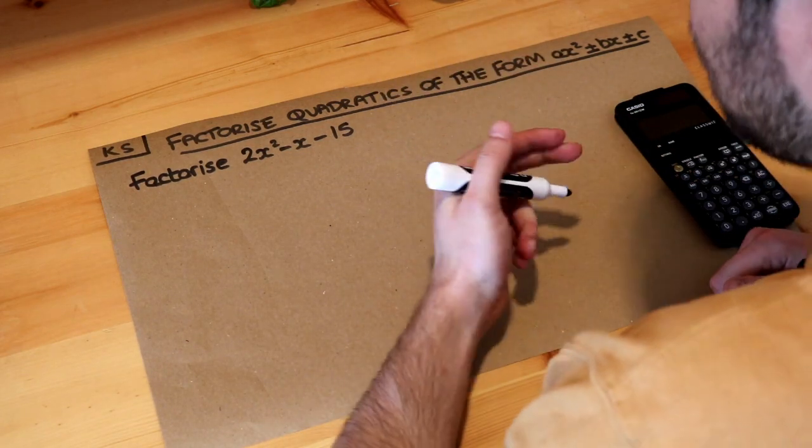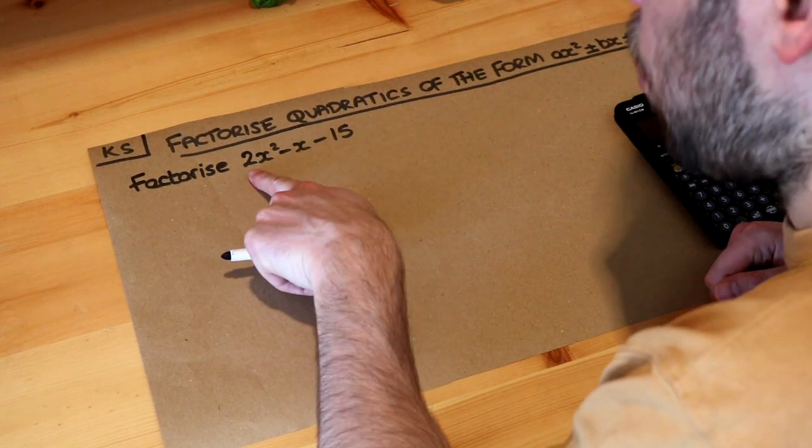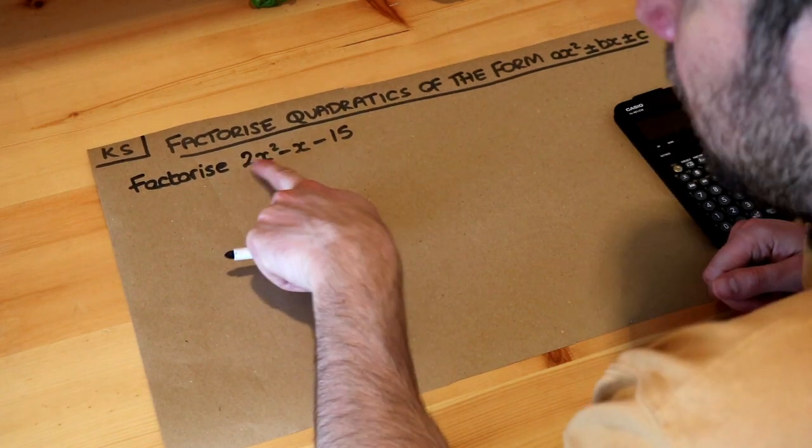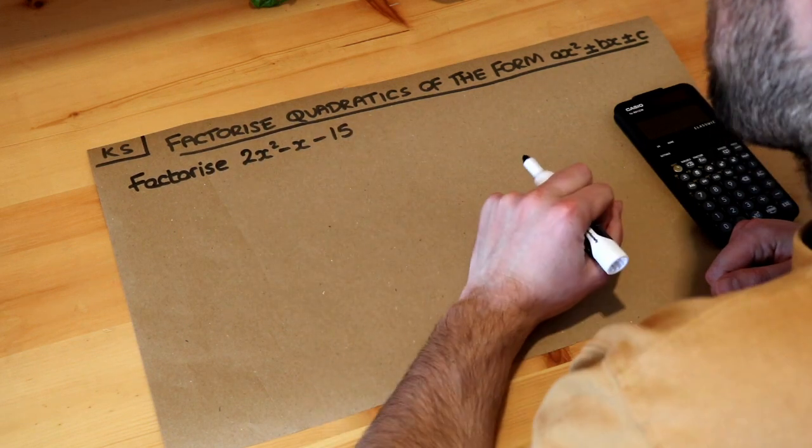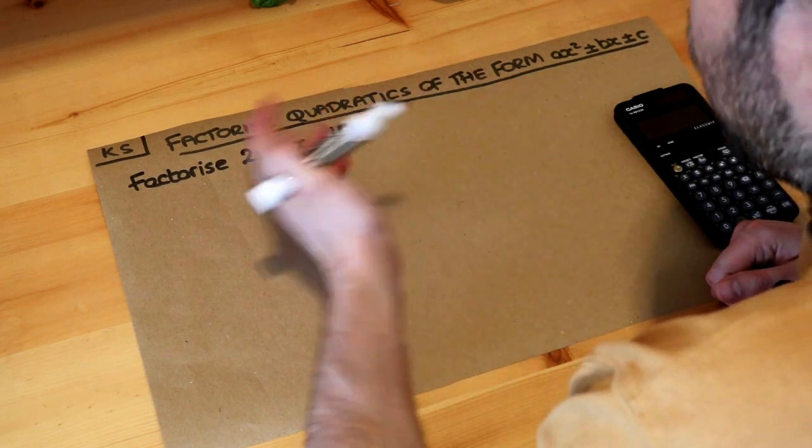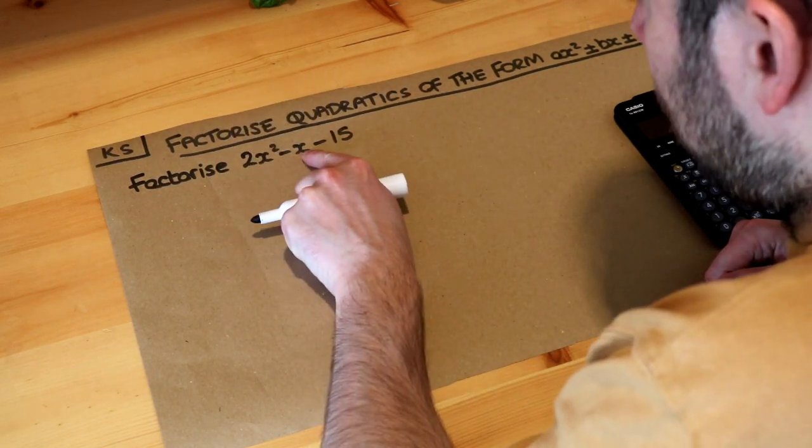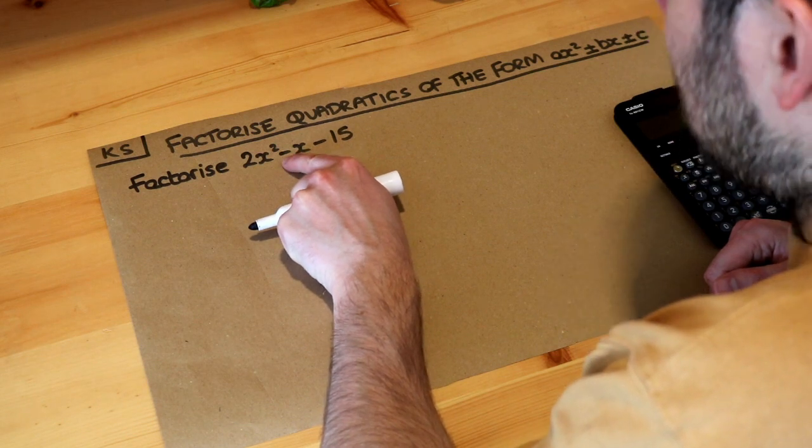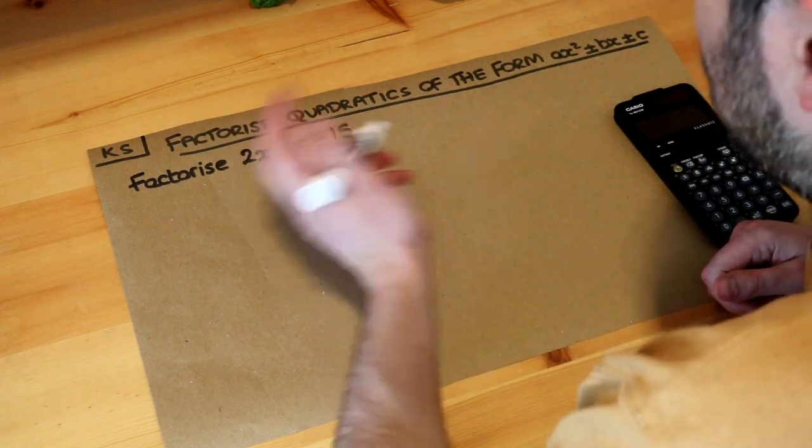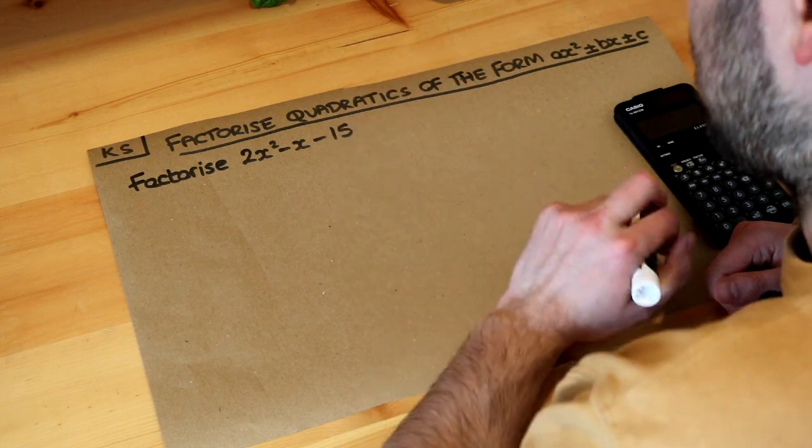Now this is the last video on factorising quadratics where there is a number in front of the x squared that's not 1. So here it's 2, it's not 1. And in this particular video we're going to allow any sign. So this sign on the front of the x here, we're allowing that to be negative and the last term is negative as well. So we could have any mixture within this key skill.